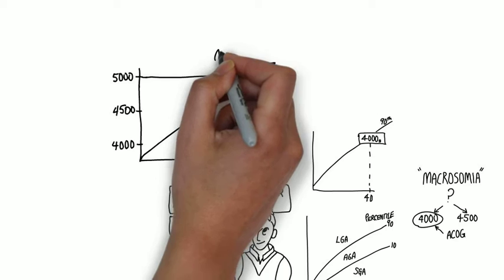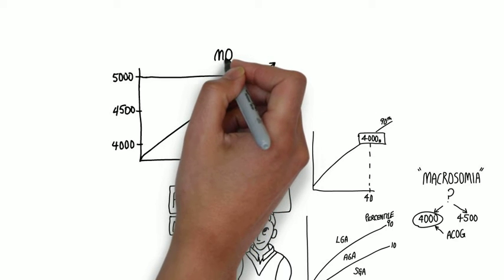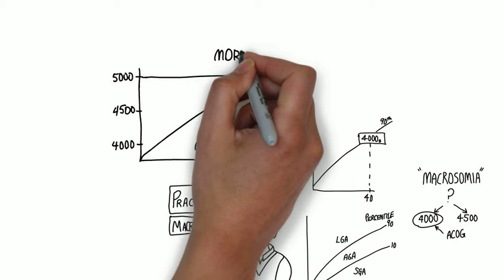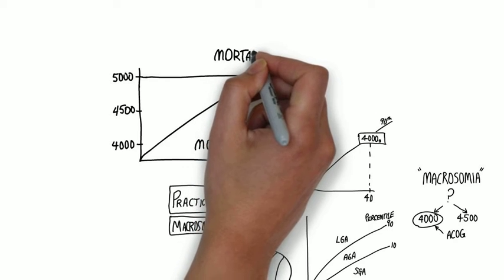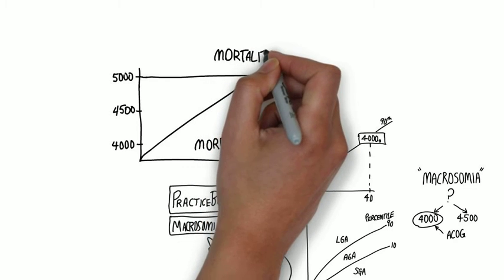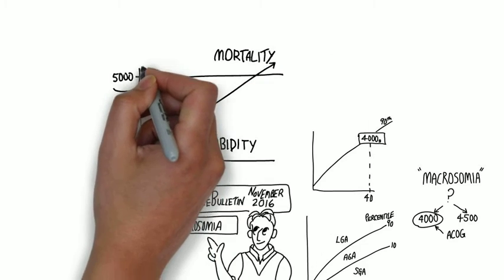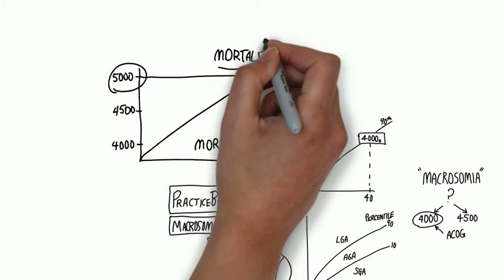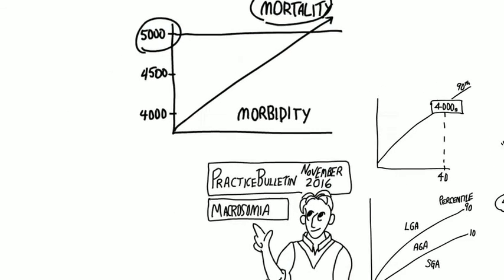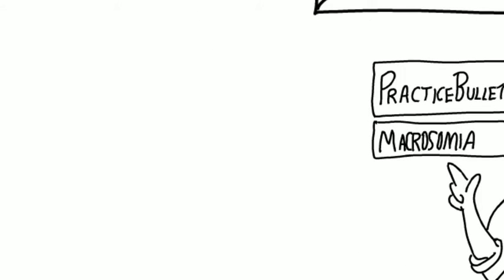The second group, 4,500 to 4,999. In this category, there is additional risk of maternal and newborn morbidity. And the third category, greater than 5,000 grams. In this category, there is additional risk of stillbirth and neonatal mortality.